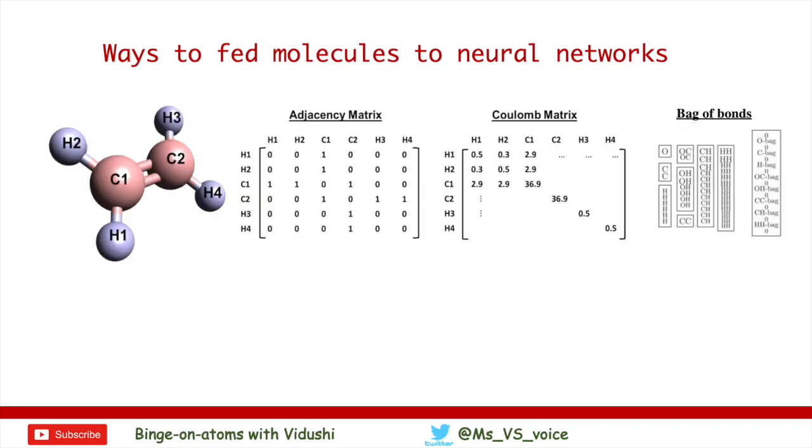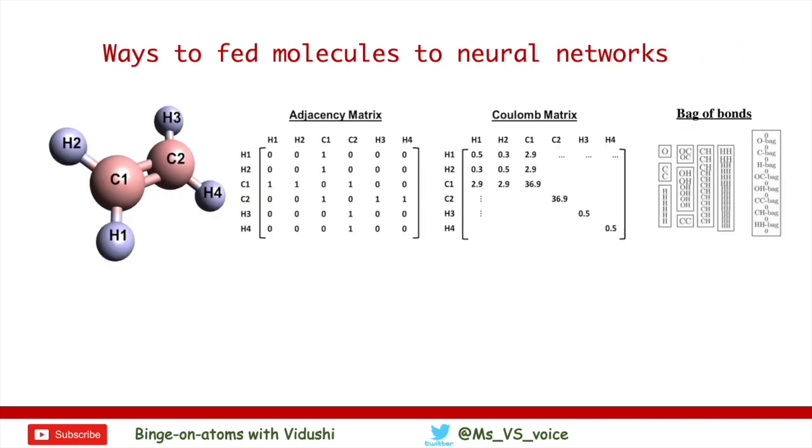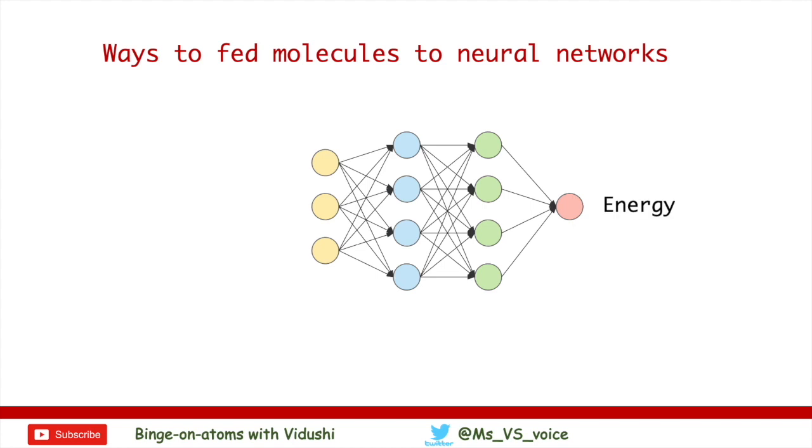Last video we spoke of some descriptors: adjacency matrix, coulomb matrix, bag of bonds that can be used to input an atomic structure as numeric matrix to neural networks. These methods encode information about atomic bonds with varying levels of accuracy and can be fed to neural networks instead of Cartesian coordinates. You can find the link to that video in the description below.